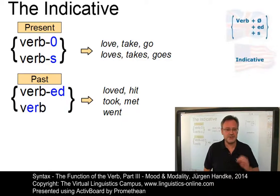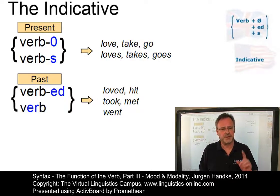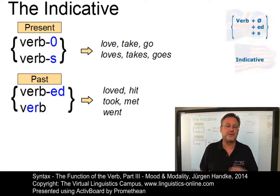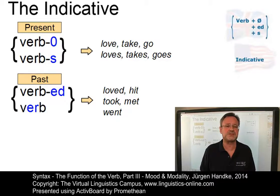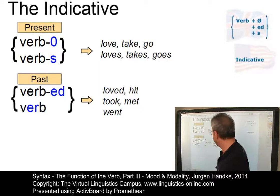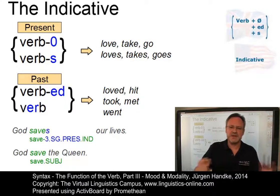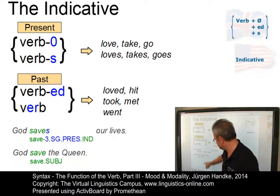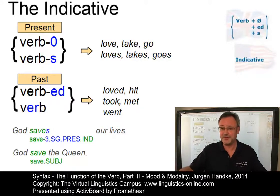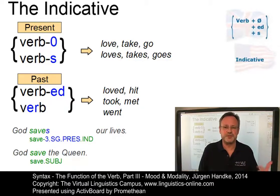In present-day English, the indicative mood is used in the majority of constructions. The distinction between the indicative and the subjunctive mood is confined to those verb forms where inflectional differences can be found — for example, the third person singular present tense forms of 'be'. Compare: 'God saves our lives' versus 'God save the Queen'. The absence of the third person singular marker turns its verb into the subjunctive form.